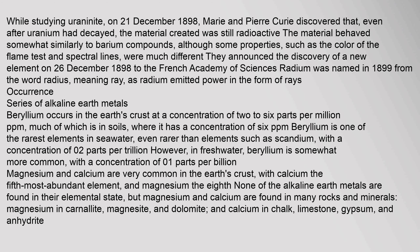While studying uraninite on the 21st of December 1898, Marie and Pierre Curie discovered that even after uranium had decayed, the material created was still radioactive. The material behaved somewhat similarly to barium compounds, although some properties — such as the color of the flame test and spectral lines — were much different. They announced the discovery of a new element on the 26th of December 1898. Radium was named in 1899 from the word 'radius,' meaning ray, as radium emitted power in the form of rays.